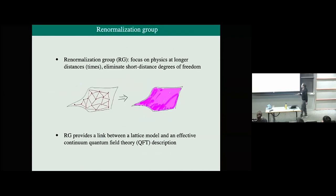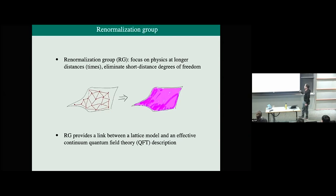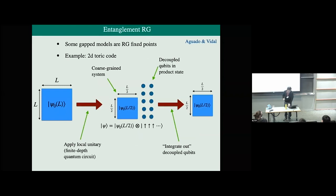What about RG? This is really just the way that we organize our thinking about physics in terms of scales. We have some short-distance description of the physics, we eliminate short-distance degrees of freedom, we coarse-grain, and if we go very far we might go from a lattice description to a continuum description. There are many ways to do it technically — it's just some way of eliminating short-distance degrees of freedom, and it gives us a link between lattice models and effective quantum field theories.